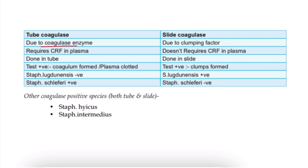The difference between tube coagulase and slide coagulase: tube coagulase is due to the coagulase enzyme and requires CRF (coagulase reacting factor) in plasma; slide coagulase is due to clumping factor and does not require CRF. In tube coagulase a coagulum forms; in slide coagulase, clumps are formed.